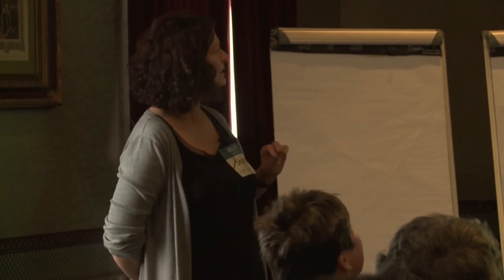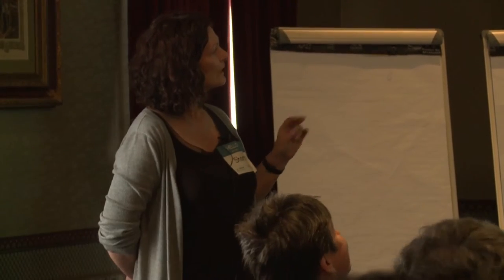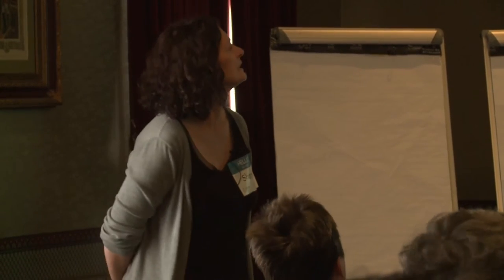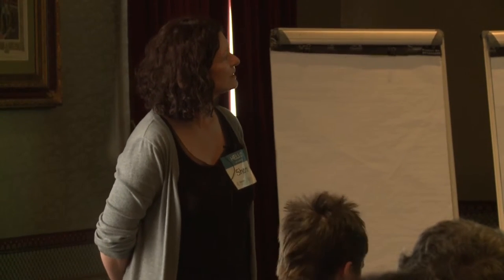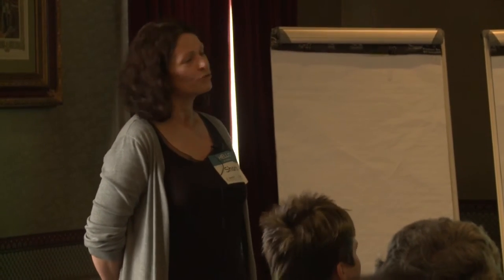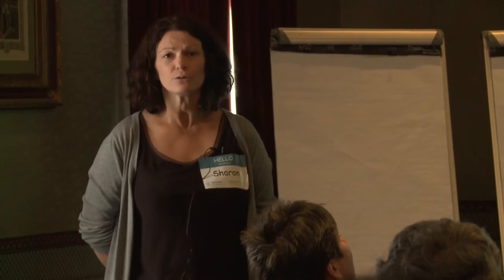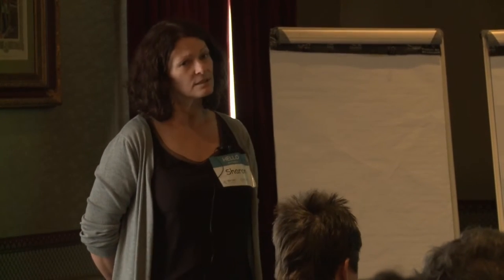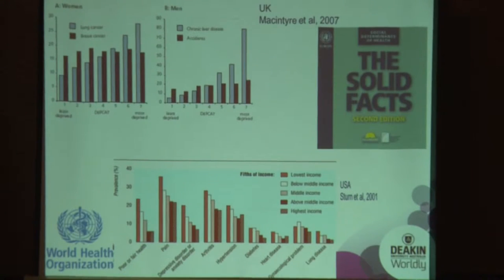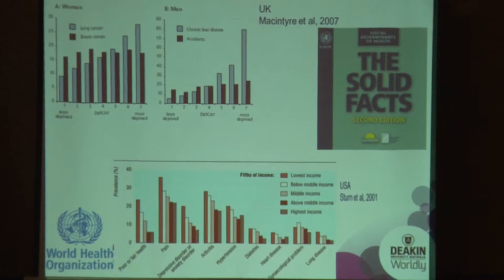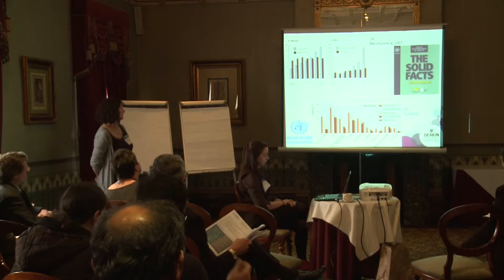We can see a social gradient of health in many diseases — respiratory disorders, breast cancer, liver disease, accidents. We see it around the world. This social gradient goes from the top to the bottom of the socioeconomic spectrum; it's a global phenomenon, affecting low-, middle-, and high-income countries. We are not protected against this inequity.